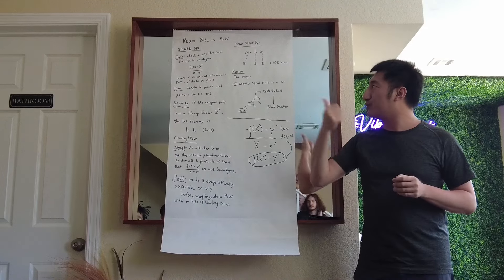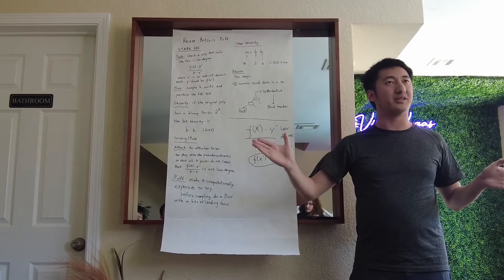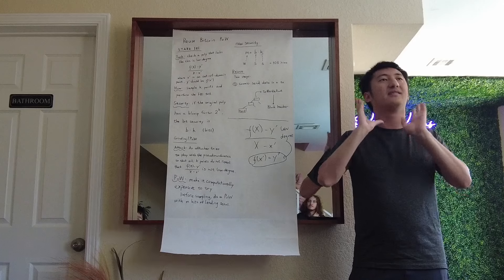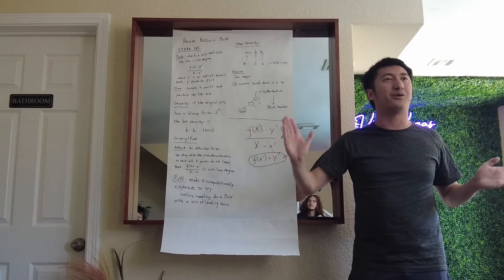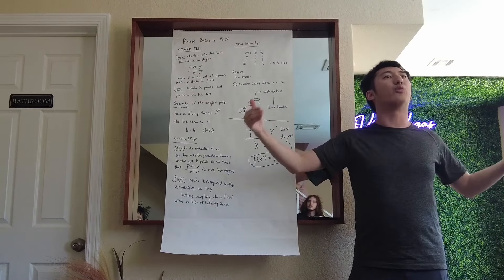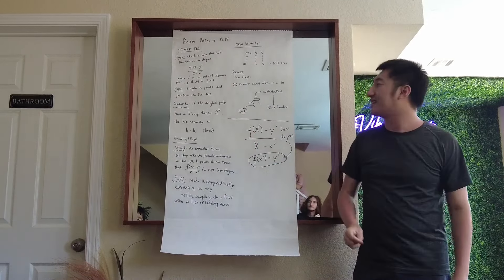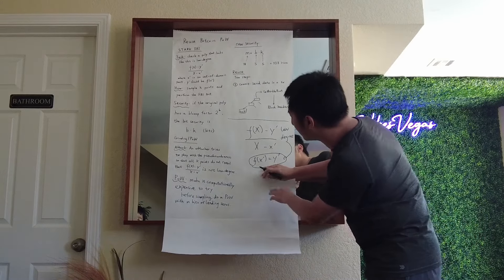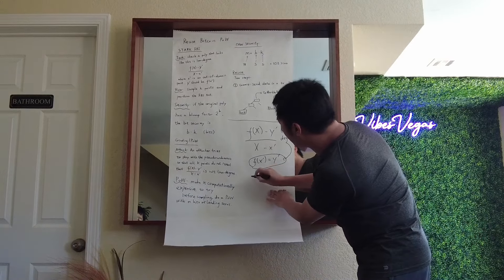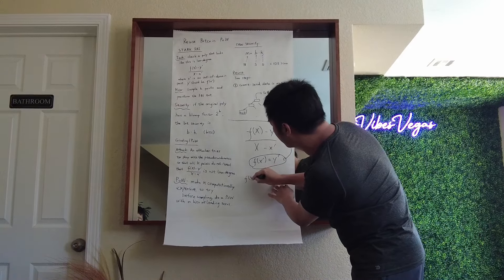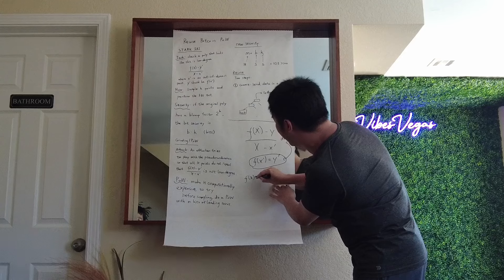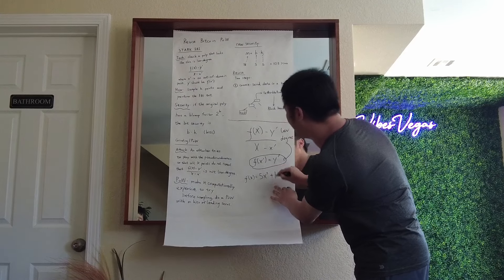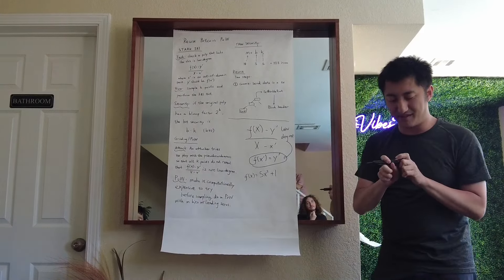When doing STARK, we want better security. Usually what we do is not just provide the coefficients — we provide a more redundant format. Maybe you have a polynomial that is very simple, just like a basic quadratic.